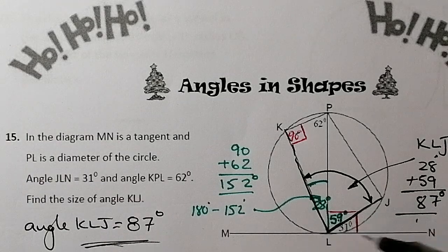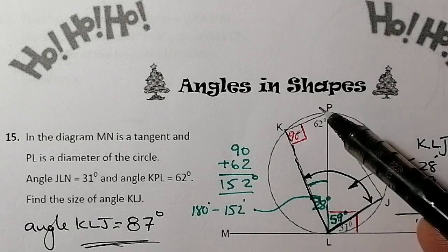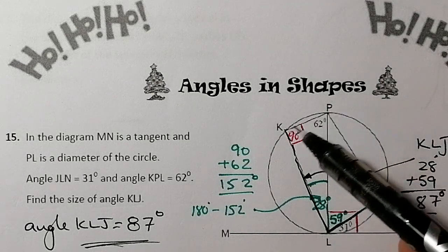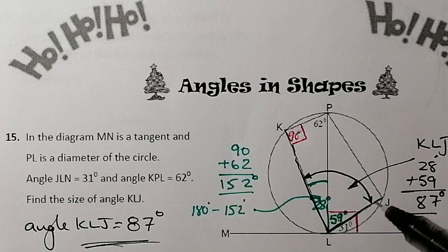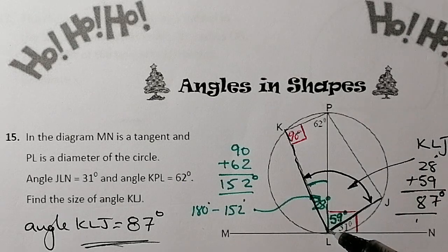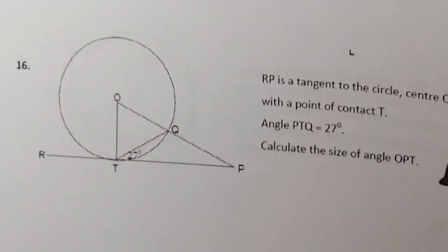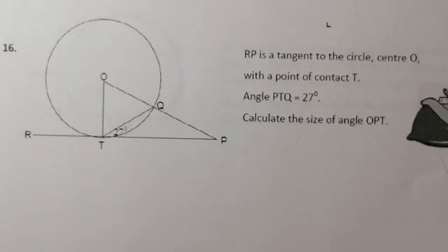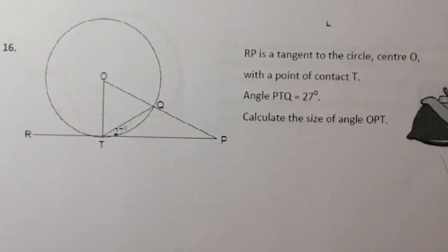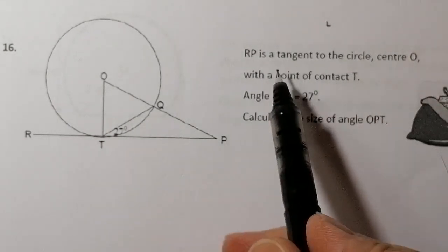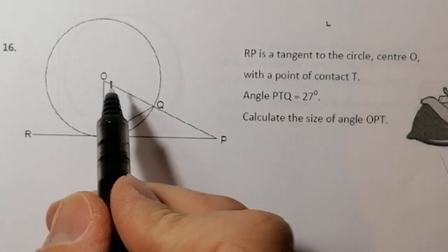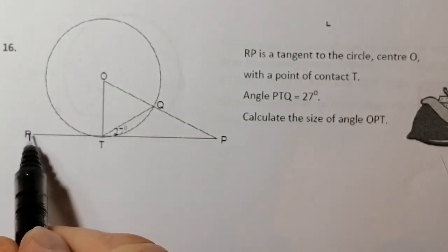So we've used a couple of properties in a circle: the tangent property, and the angle in a semicircle — a line from both sides of the diameter touching the circle gives 90 degrees. That angle over here would also be 90 degrees, but I didn't need that to calculate what I was asked. Let's look at the next question. We've got RP as a tangent to the circle with centre O.